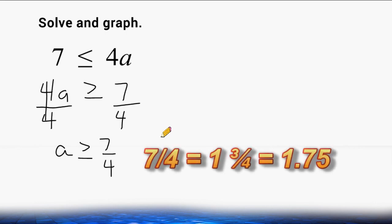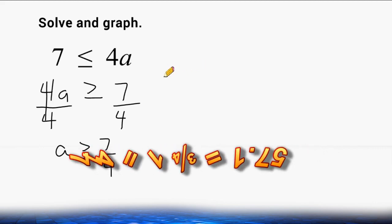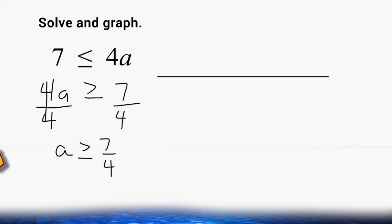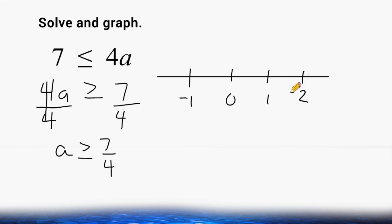We have to construct a number line and show where all of the values on the number line are greater than or equal to 7 quarters. So we are going to go ahead and construct a number line. Let's say that this is negative 1 here, this is 0 right here, and this is positive 1, and positive 2 will give us enough numbers. Now, between each one of these whole numbers, we are going to break them into quarters, because our answer or solution is 7 quarters.